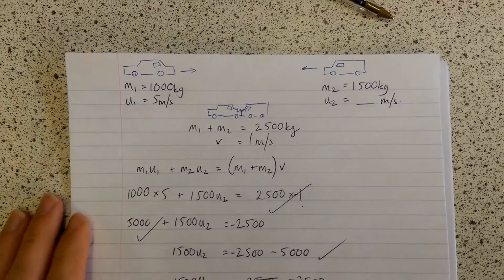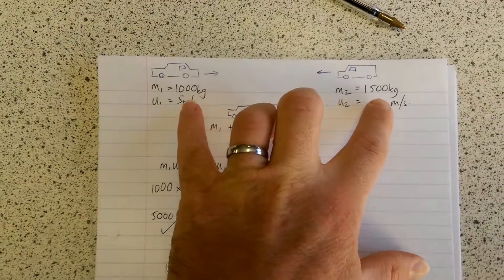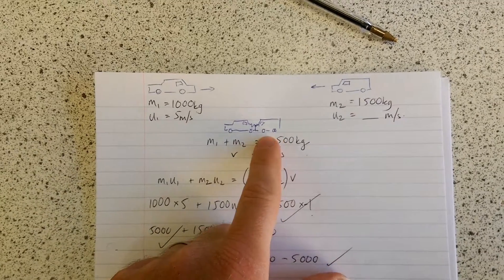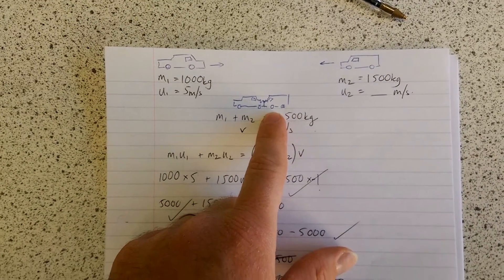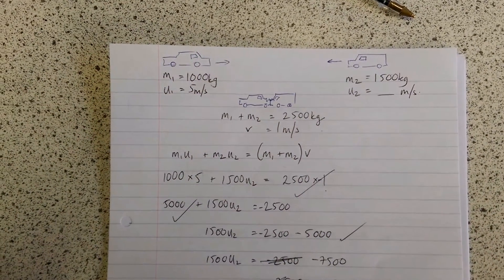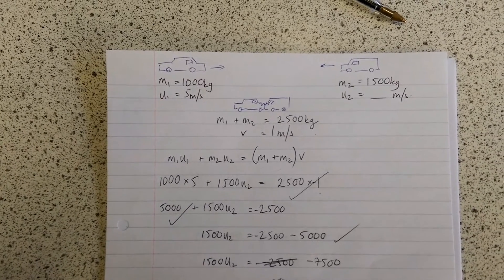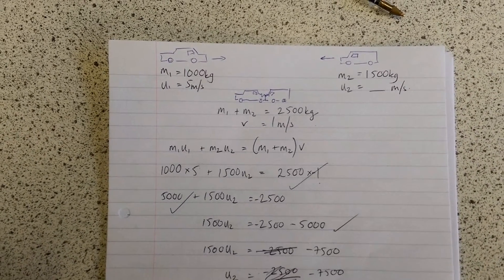This was an error I made whilst going through this question on the board. It's a simple one where there's two objects colliding and they're moving as one mass afterwards. You're told the mass of the car, the mass of the van, and you're asked to work out the initial speed of the van.